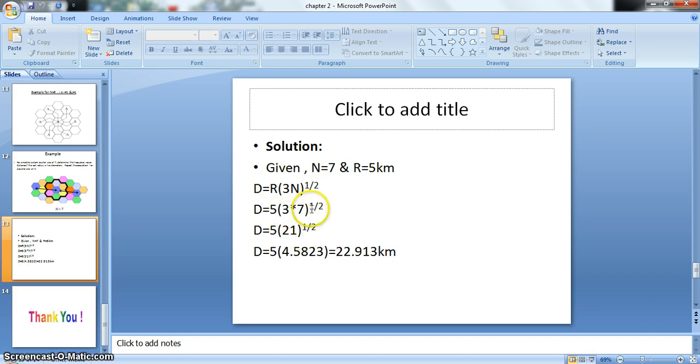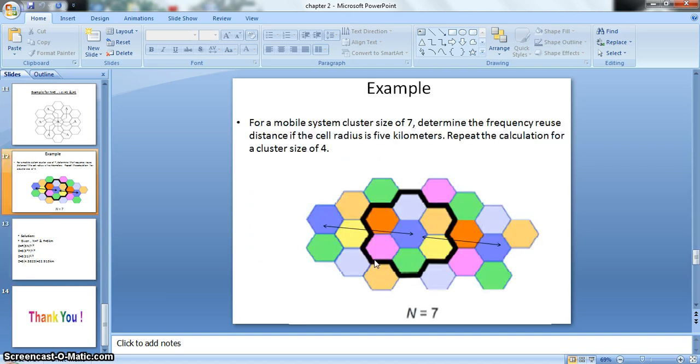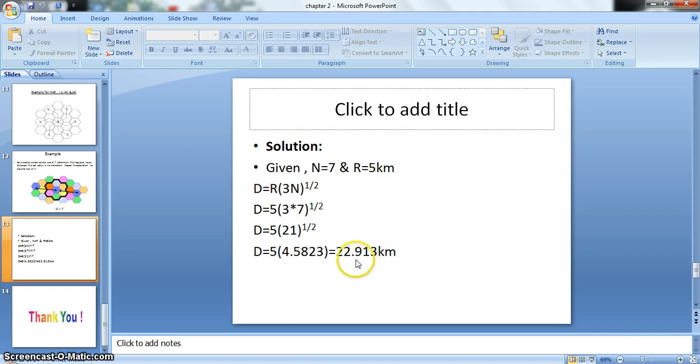So if I apply the values, I will get the distance as 22.913 km. So at this distance, all the co-channels are being separated to avoid the interference. So all these blue colors or pink colors, whatever it is, you can see here, green color. So they are at a distance of 22.913 km.